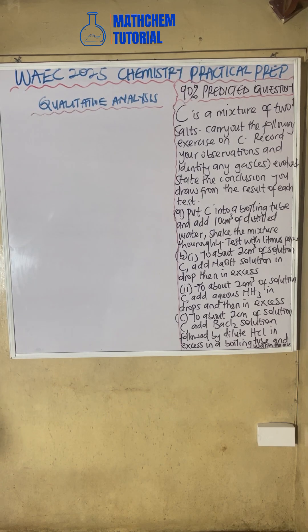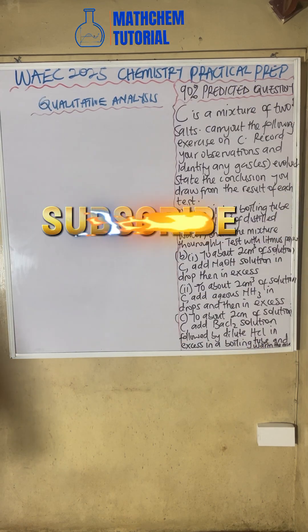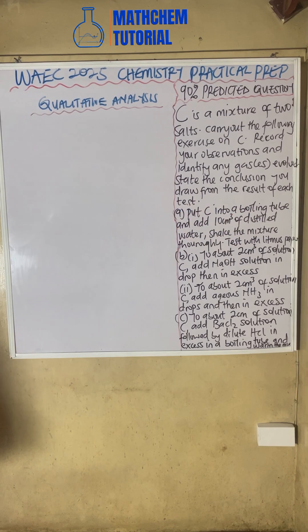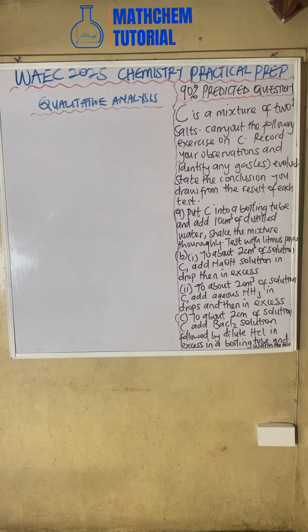For the qualitative analysis, once you practice these questions, many of them will come out from the exam. So take your time to study this video very well and ensure to watch it to the end. Don't forget to request Part A and Part B if you haven't watched. Now, qualitative analysis involves identifying cations, anions, gas, or organic compounds using reagents.